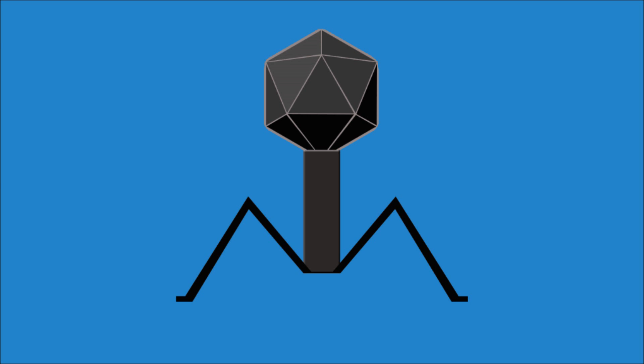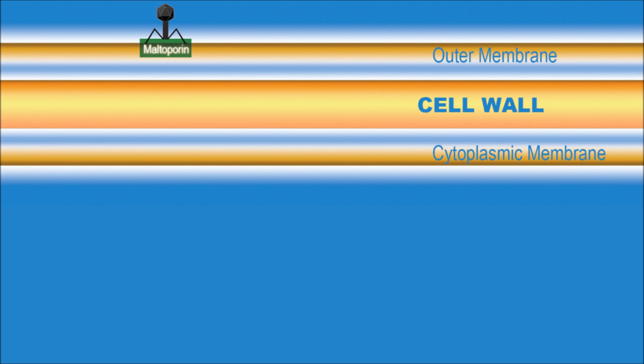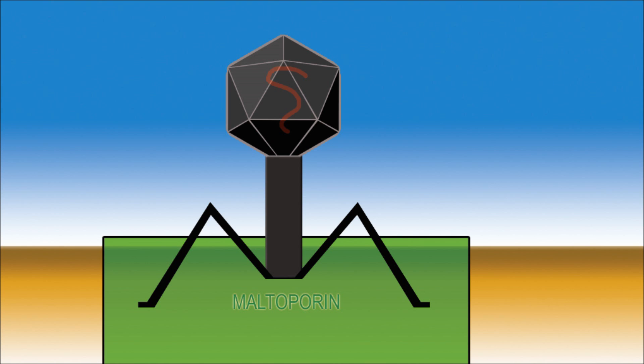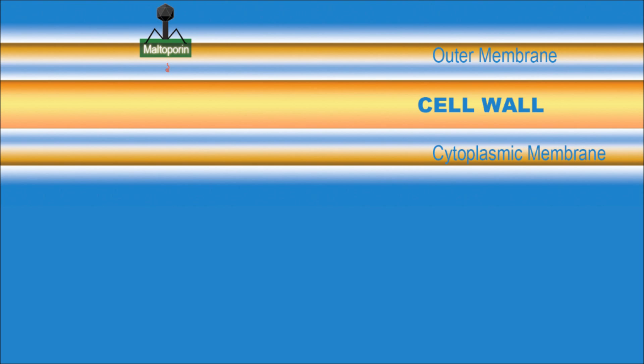it must inject its DNA into a host cell. First, it must get its genome past the outer membrane. It does this via the protein maltoporin, which normally recognizes maltose. The fiend injects the DNA, and it passes both through the outer membrane and through the cell wall.